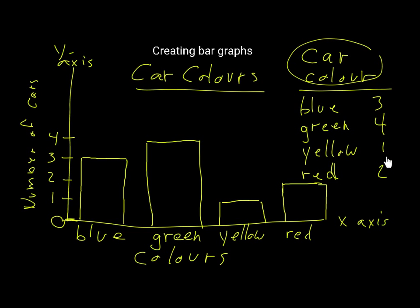I have shown you how to take a table and put the information from the table into a bar graph. The bar graph has an x and y-axis. Along the x-axis you write these items — the labels identifying the groups — and along the y-axis you have the numbers that go with those groups.